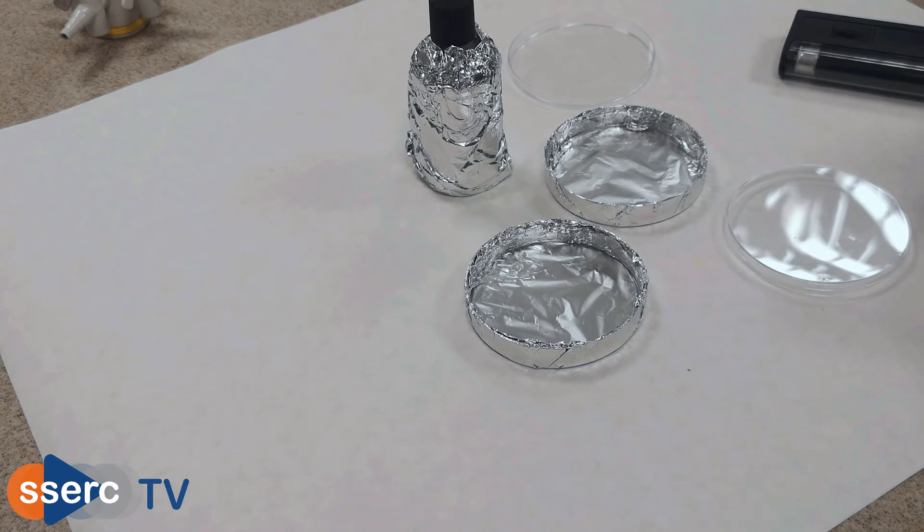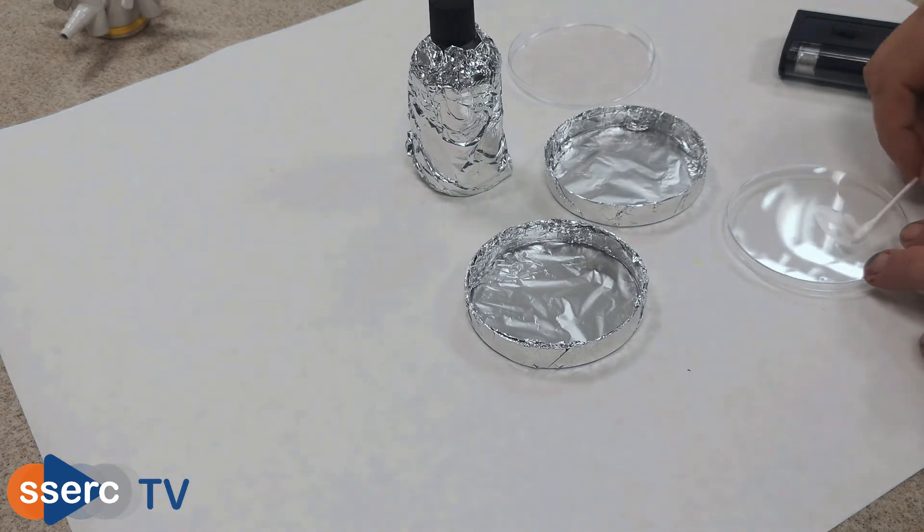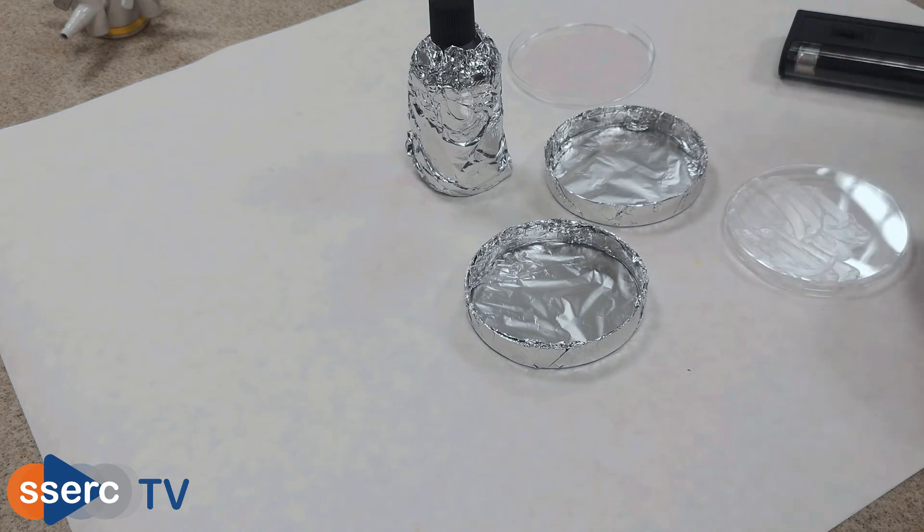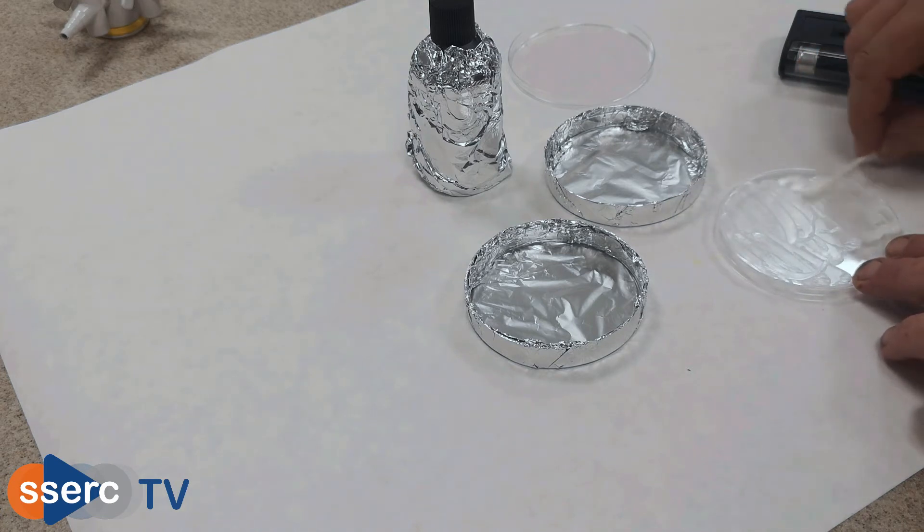Now you need to apply your sunscreen or sunscreens to the lids of all but one of the petri dishes, keeping one as a control. The easiest way is probably to smear it over with a cotton wool bud, but you can do it however you like. There is also an interesting discussion that can be had about this with your pupils about how best to make this a fair test.